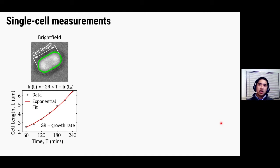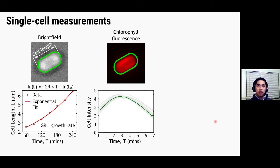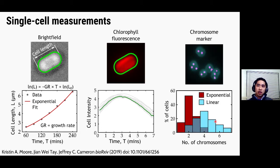So using our image analysis code, we can measure many different properties of cells. For example, we can measure the length of a cell over time. And once we have that data, we can then fit it to an exponential curve and measure the growth rate. As I mentioned earlier, we can also monitor chlorophyll fluorescence over time, and get a readout of the photosynthetic state of the cell. And finally, we can also fluorescently label different components of the cell, such as chromosomes. And these will typically appear as small spots within the cell itself. And our code allows us to count and also monitor the position of these spots within each cell.